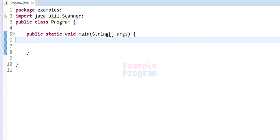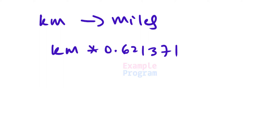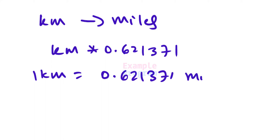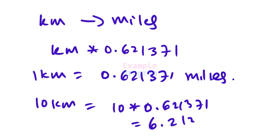If we have the distance available in kilometers and we want to convert it to miles, we have to take the distance in kilometers and multiply it with 0.621371, because 1 kilometer is equal to 0.621371 miles. For example, if we have 10 kilometers, we multiply by 0.621371 and we get 6.21371 miles.